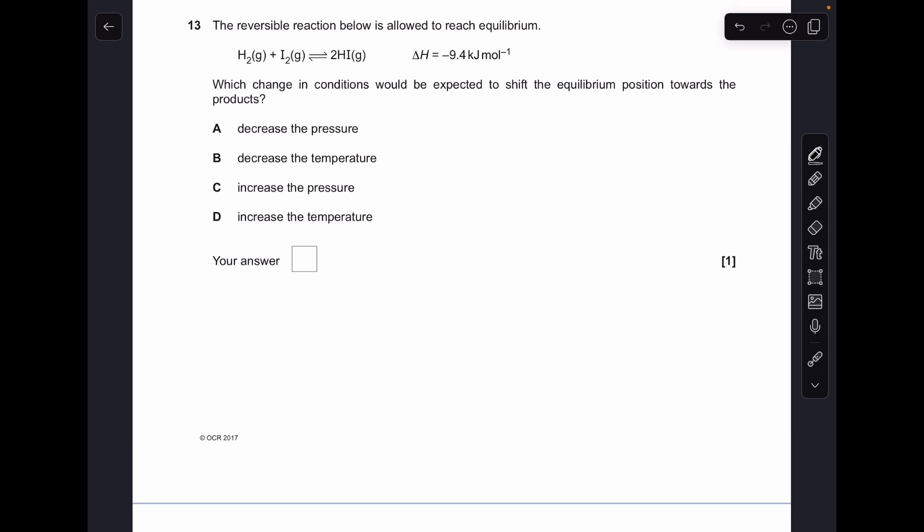Question 13, so we'll look at pressure first. Will pressure affect this equilibrium position? No, because you've got 2 moles of gas on the left, 2 moles of gas on the right. So anything with pressure in, we can cross out. So to get the effect of temperature, the delta H is negative, which means the forward reaction is exothermic, and so we need a low temperature to favor that forward's exothermic reaction. So we decrease the temperature, so option B.